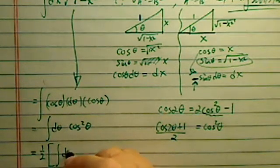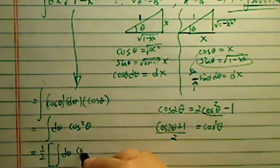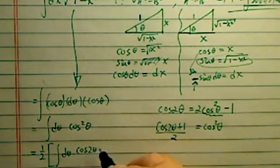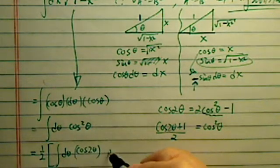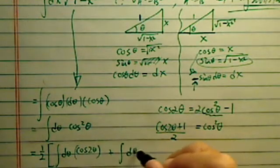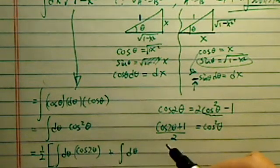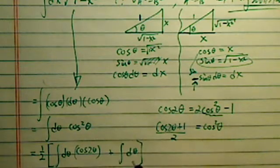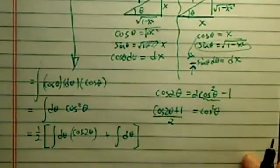So I have a half. Let's see, we'll have d theta. The first term is cosine of 2 theta. And then the second term I have is d theta. Half is outside.